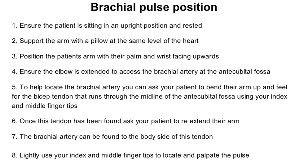To obtain the correct brachial pulse position, firstly ensure that your patient is sitting in an upright position and is rested. Support their arm with a pillow at the same level as their heart. Position their arm with their palm and wrist facing upwards. Ensure their elbow is extended to access the brachial artery at the antecubital fossa. To help you locate the brachial artery, you can ask your patient to bend their arm up and feel for the bicep tendon that runs through the midline of the antecubital fossa using your index and middle fingertips.